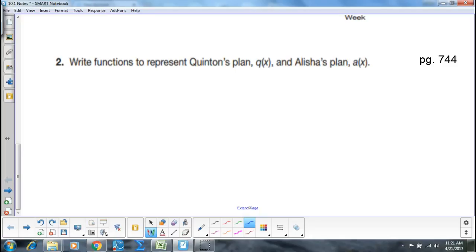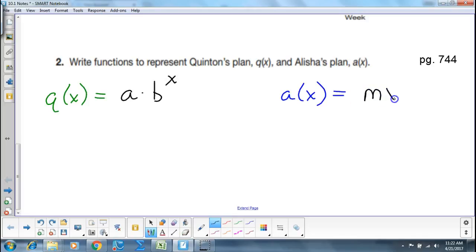What I would like you guys to do now is I'd like you to do number two. Remember, I want you to come up with a function for A of x for Alicia's plan, and I want you to come up with a function for Q of x, which is Quentin's plan. Remember that you told me that Q of x was exponential, and A of x you told me was linear.